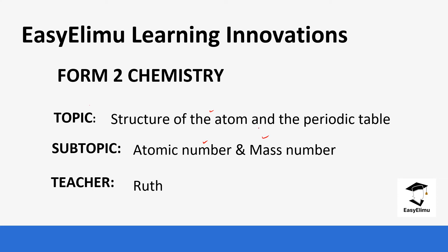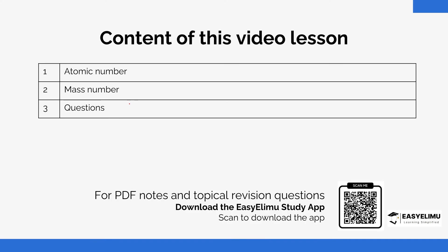Previously we discussed atomic theory — we were able to see the different scientists that contributed to the structure of the atom and their contributions, and also we looked at the sub-atomic particles of the atom and checked their masses and charges. Today we are going to introduce the concept of the atomic number and mass number, do a few examples identifying them, and then answer a few questions.